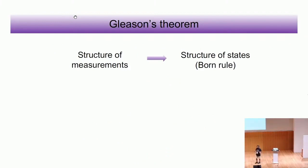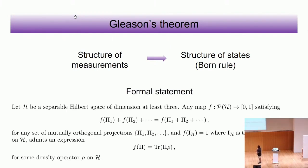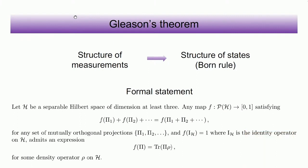Gleason's theorem: the conceptual core says that the structure of projective measurements in quantum theory gives you the structure of states. It basically proves the Born rule if you start with the structure of projective measurements. Formally, if you have a Hilbert space of dimension at least three and ask for a map from projections to probabilities satisfying additivity for mutually orthogonal projections and assigning one to the identity, then that map must be of the form trace(rho · P), where rho is your quantum state.